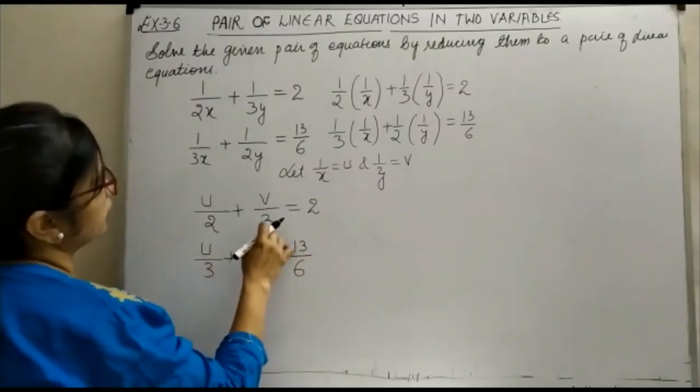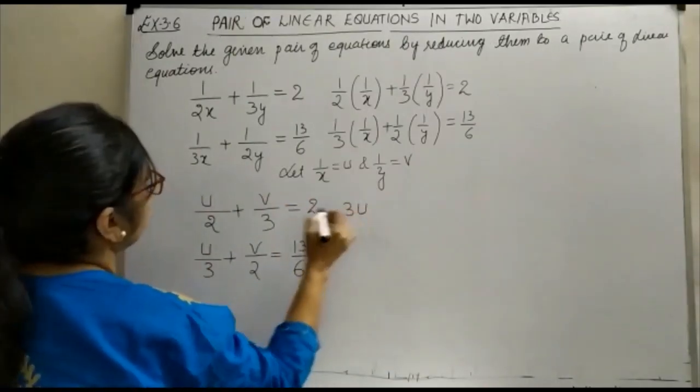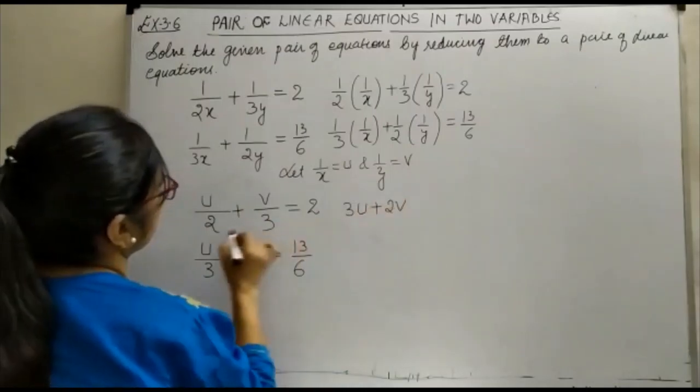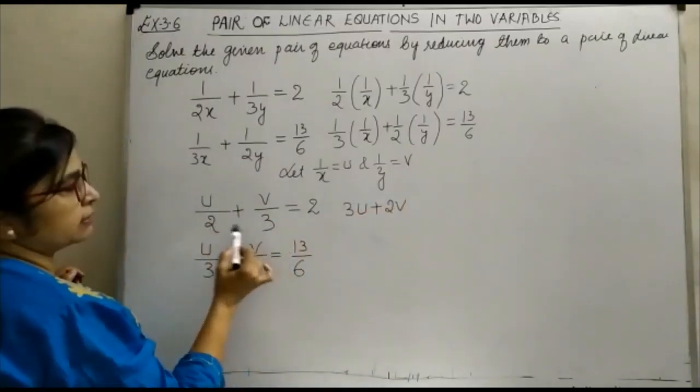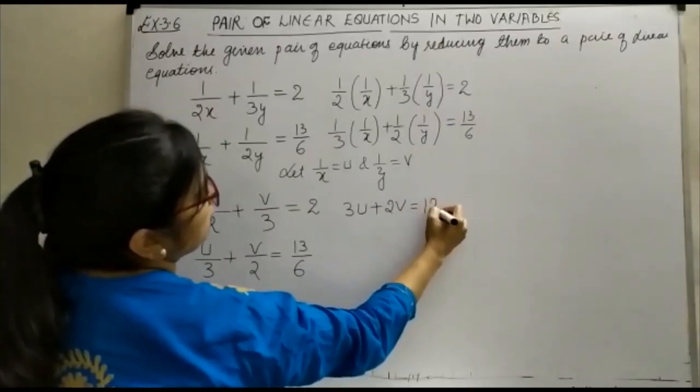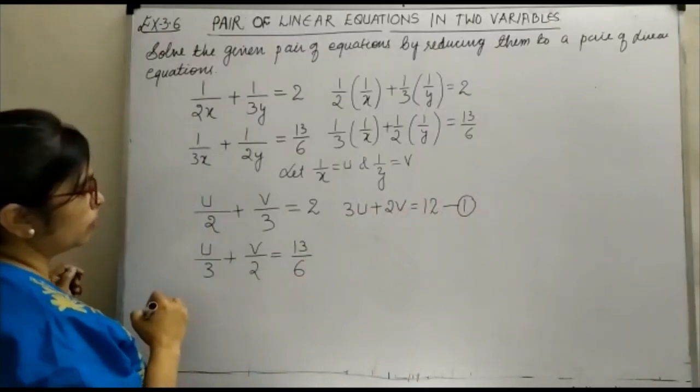Similarly, your second equation takes the form u upon 3 plus v upon 2 is equal to 13 upon 6. When we take the LCM, this becomes 3u plus 2v is equal to, here LCM is 6, so 6 into 2, that is your 12. Now, this is the standard equation, so this you can give us equation number 1.